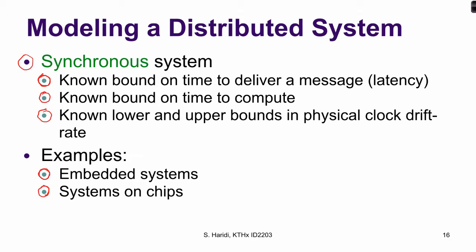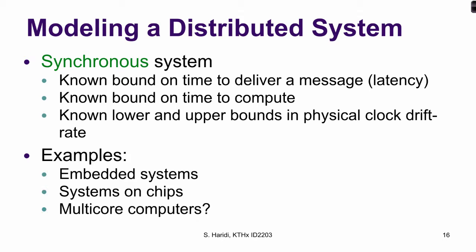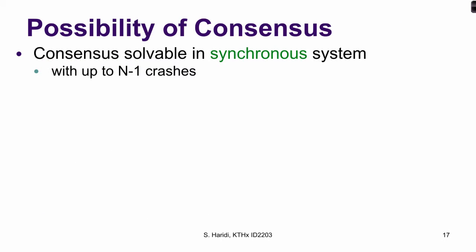Something in between is multi-core computers. These computers might have multiple cores, each with its own processor and clock, but computation and communication still takes a bounded time. Consensus is solvable in synchronous systems, even with up to n-1 processes crashing.